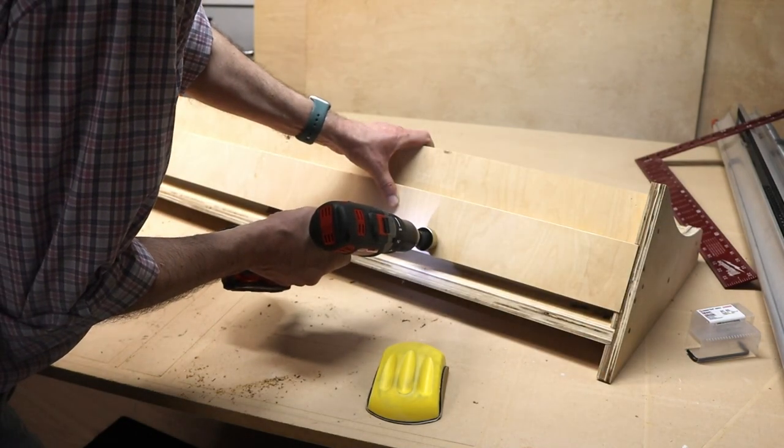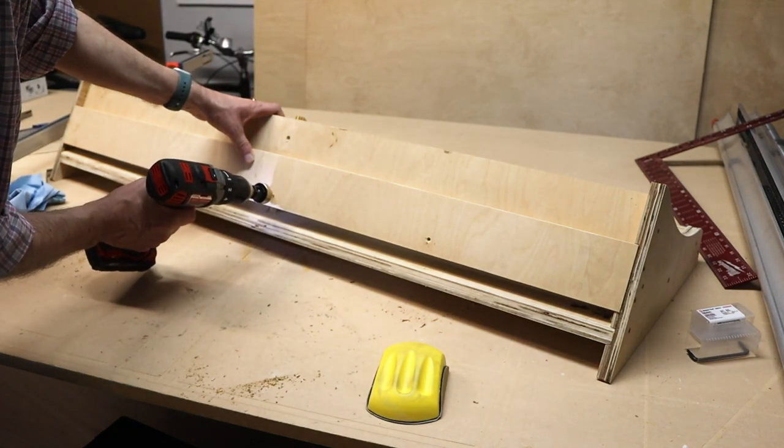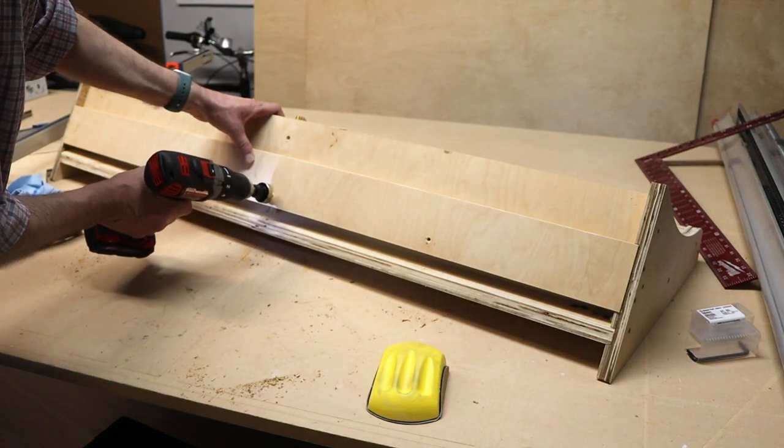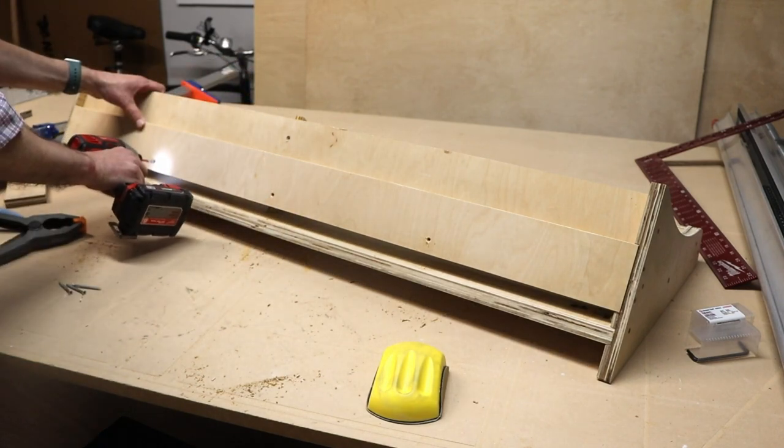Finally I drilled some holes. I didn't pre-drill these with the CNC machine, so I just drilled these where it looked about right, so that I could add some screws to hold the cleat to the shoe shelf as well.